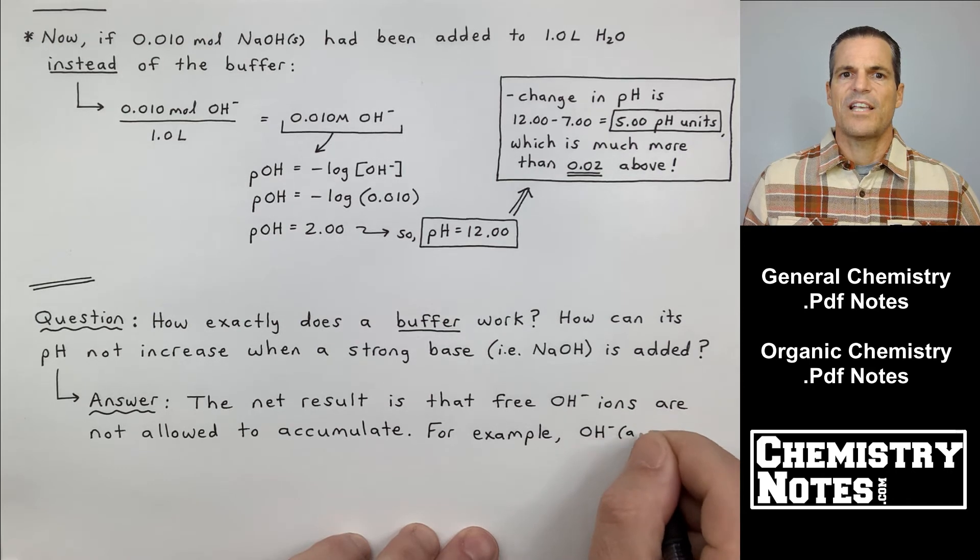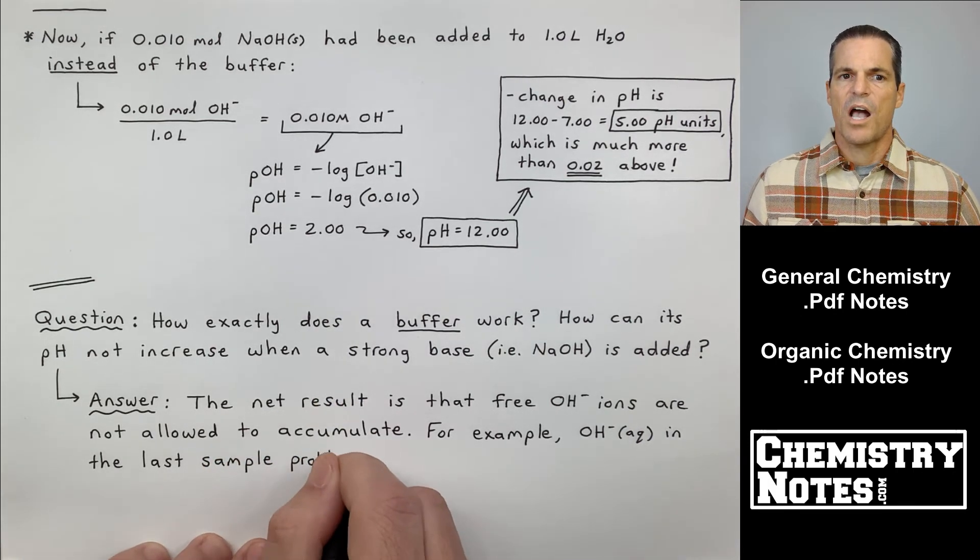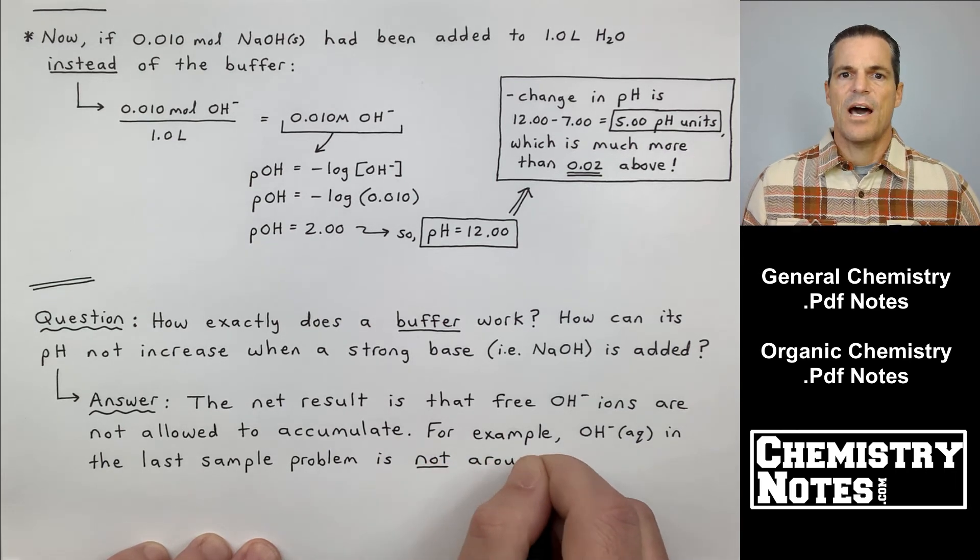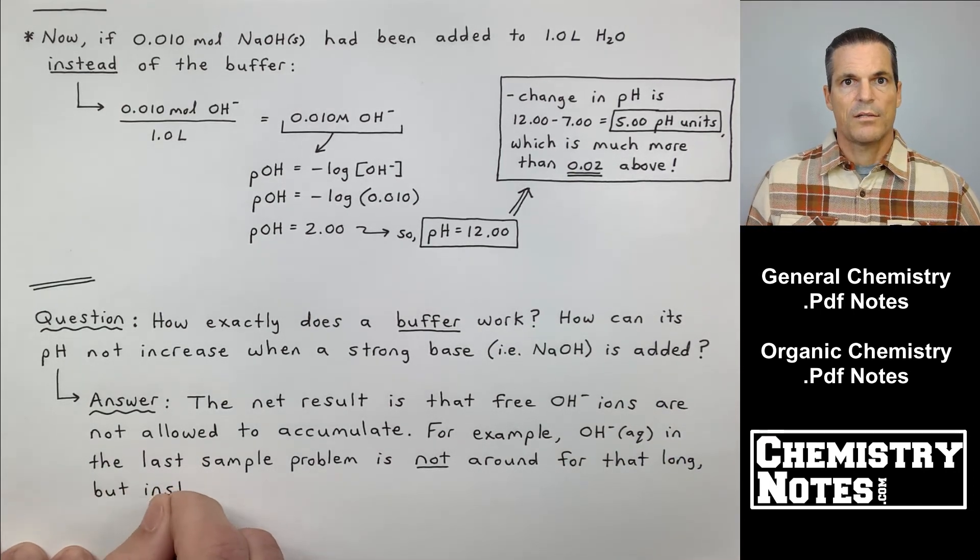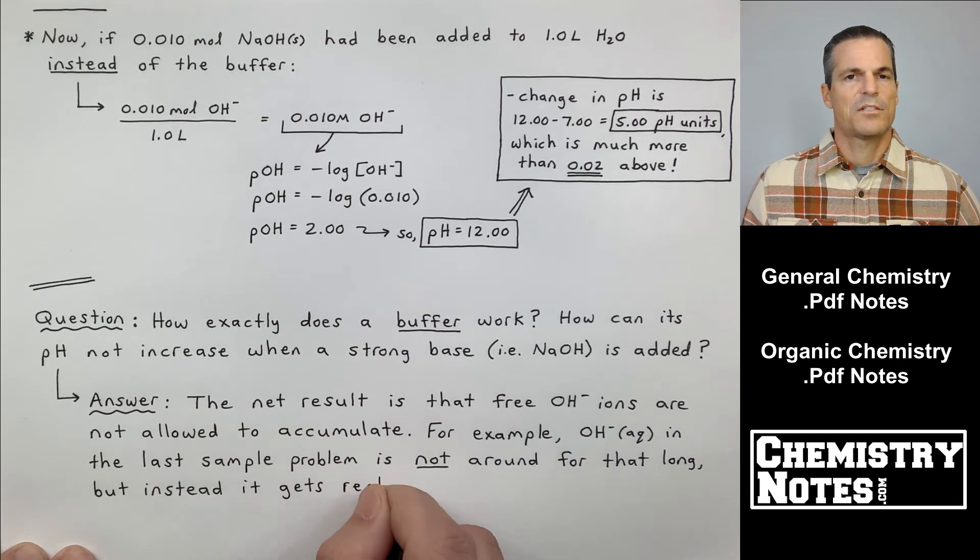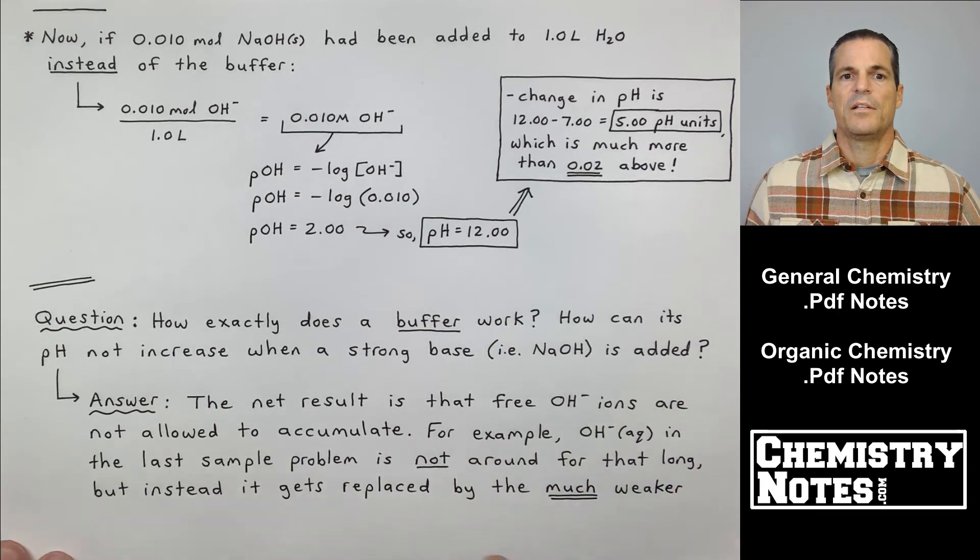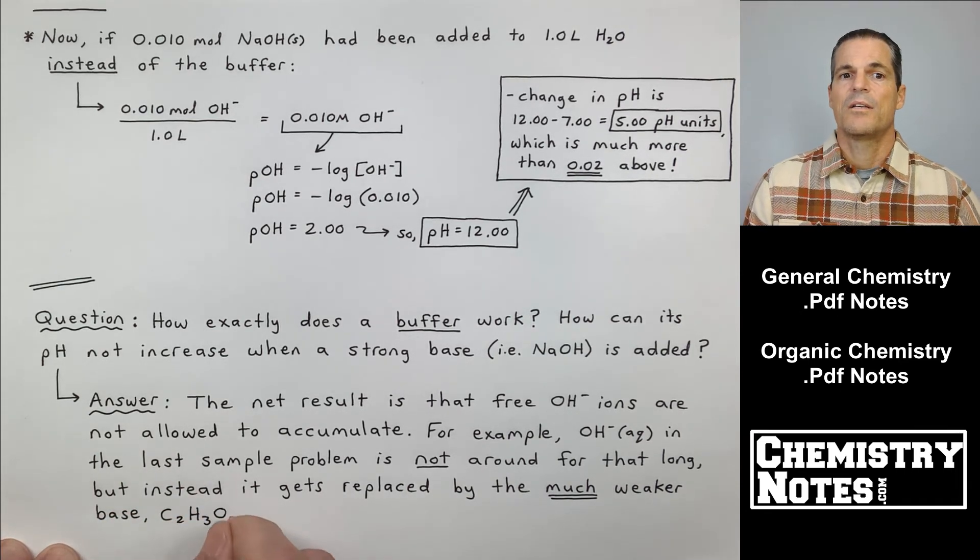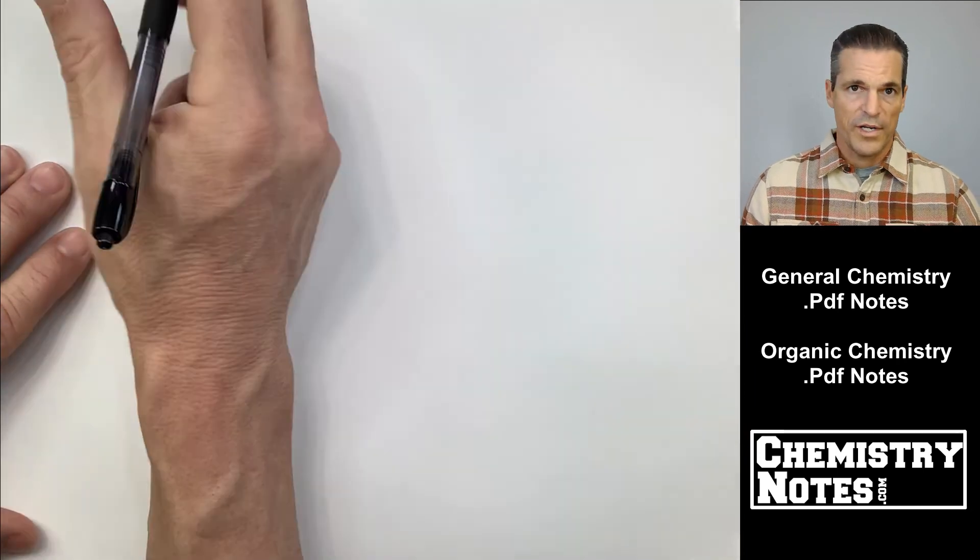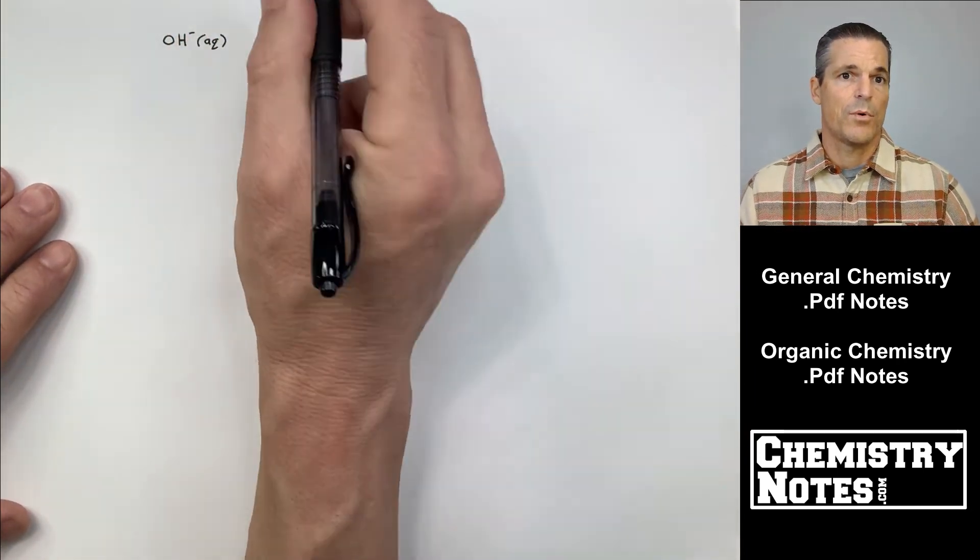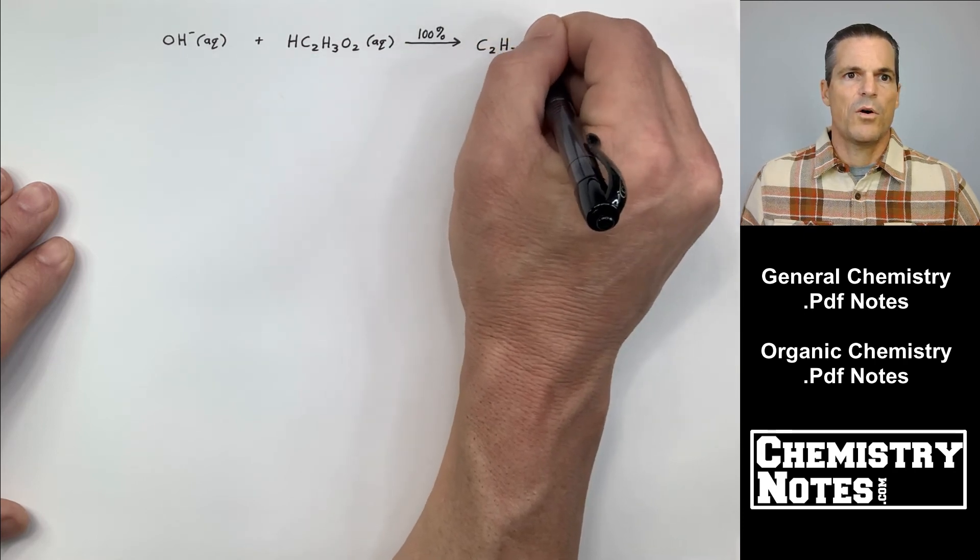So the answer, the net result is that free OH- ions are not allowed to accumulate. They don't stick around. We get rid of them. For example, OH- aqueous in the last sample problem is not around for that long. If you remember, the OH- reacted 100% towards products when it reacted with HC2H3O2, and then our products were water, H2O, and the acetate, C2H3O2-. So in the last problem, the OH- wasn't around very long, but instead it got replaced by the much weaker base on the product side, C2H3O2-, according to the following equation, which I had already written when we did the problem. OH- plus HC2H3O2.